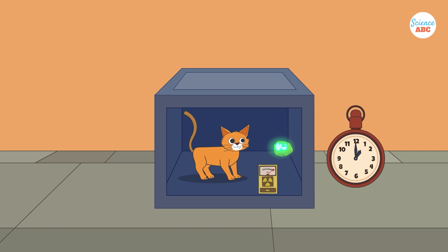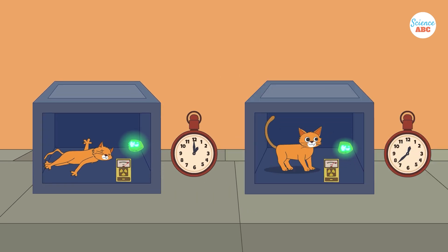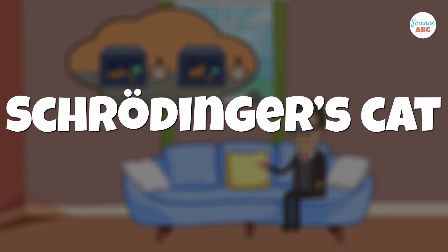If it did, the Geiger counter would detect it, triggering a hammer to break a vial of poison, killing the cat. If no atom decayed, the cat would remain unharmed. This became known as Schrodinger's cat.